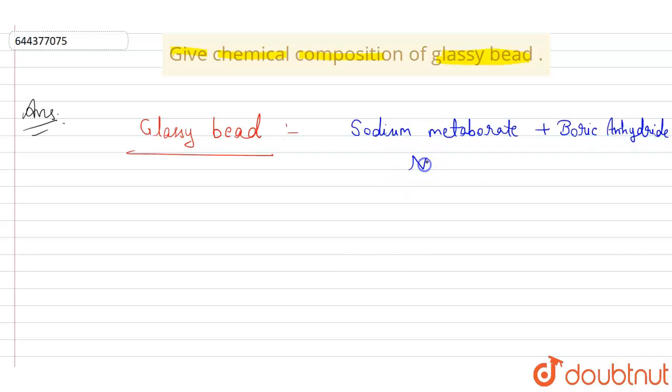Sodium metaborate formula is NaBO2 and boric anhydride is B2O3. This is called glassy bead.